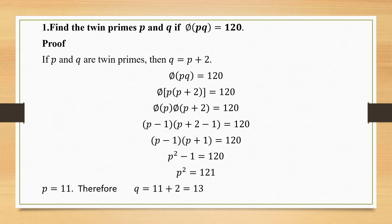Find the twin primes P and Q if φ(PQ) = 120. Now if P and Q are twin primes, I have two results. One is Q = P + 2. φ(PQ) is given equal to 120, and we need to find the values of P and Q using the definition or the result of the twin prime.